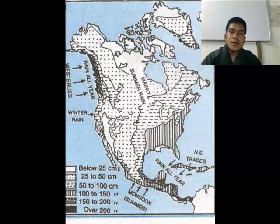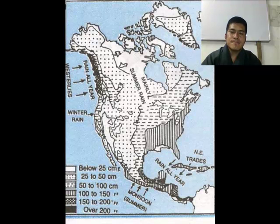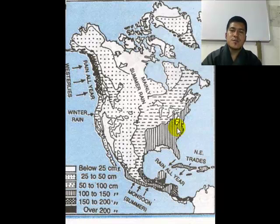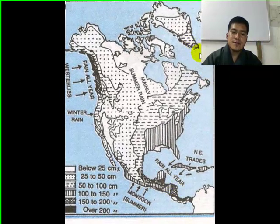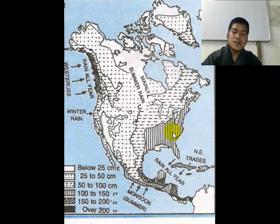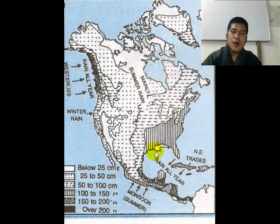Let us look at the rainfall distribution pattern of North America. It is greatly influenced by the north-south direction of its mountains and the direction of prevailing winds. The eastern half of the continent receives much more rain than the western half — about 100 to 150 cm and even more in some regions. The Northeast Trade Winds blow from the North Atlantic Ocean and the Caribbean Sea, so this area receives rain throughout the year, with heavier rain during summer.